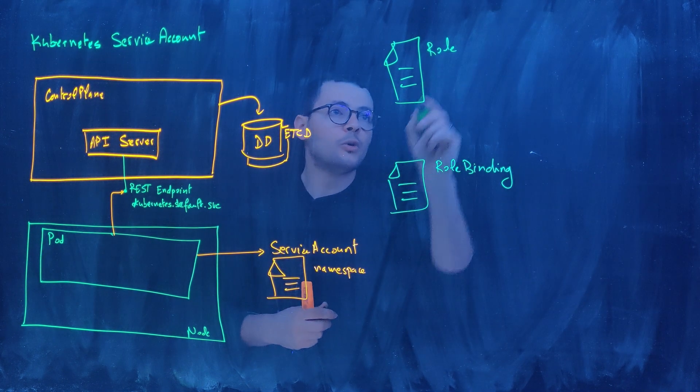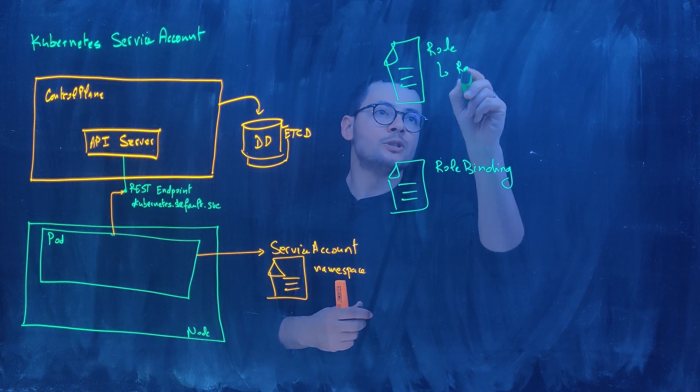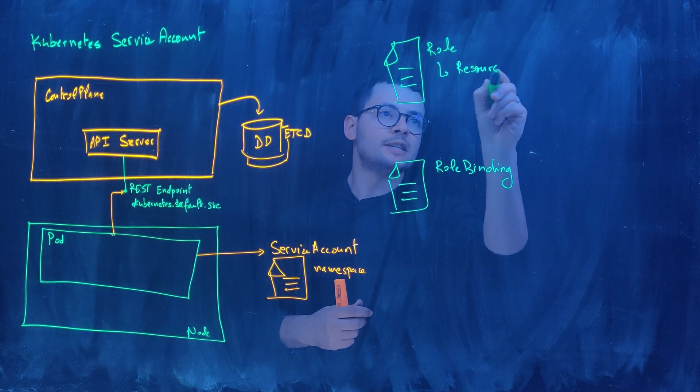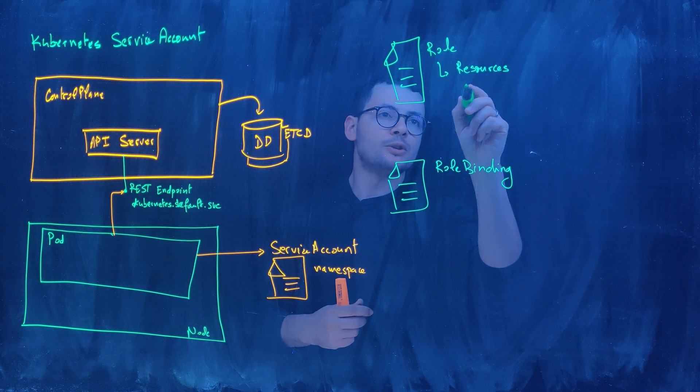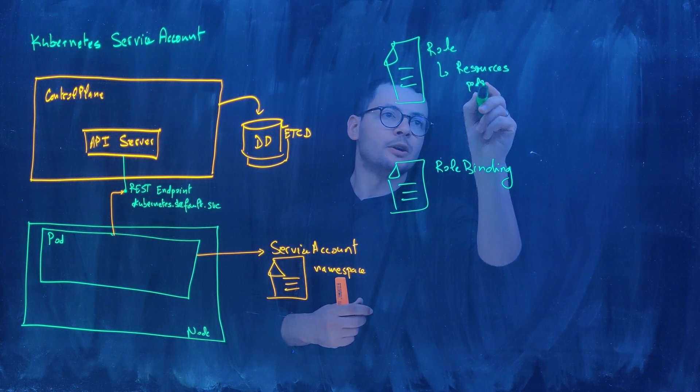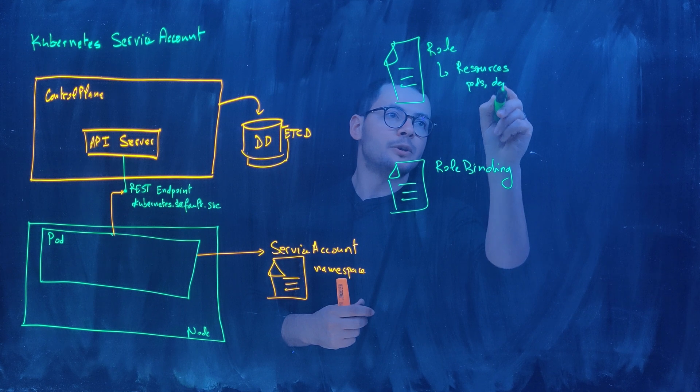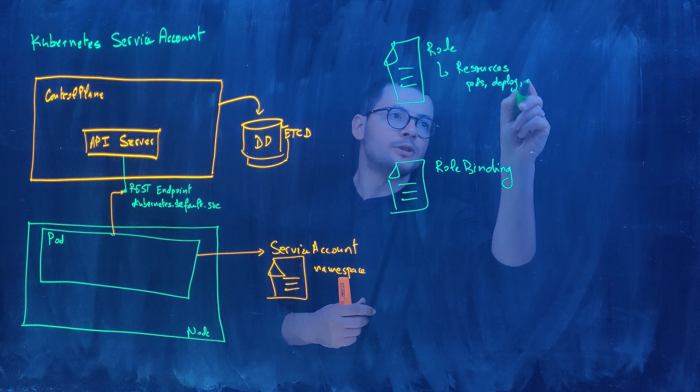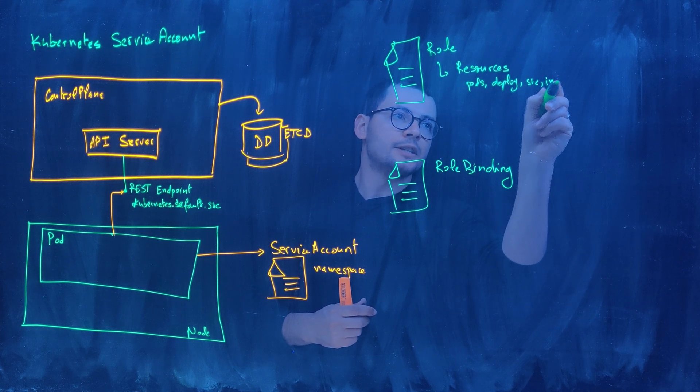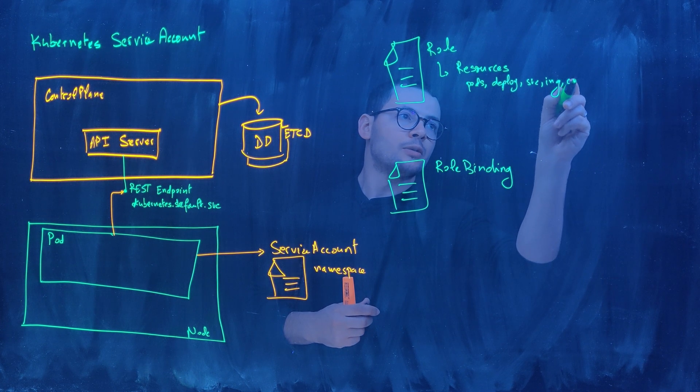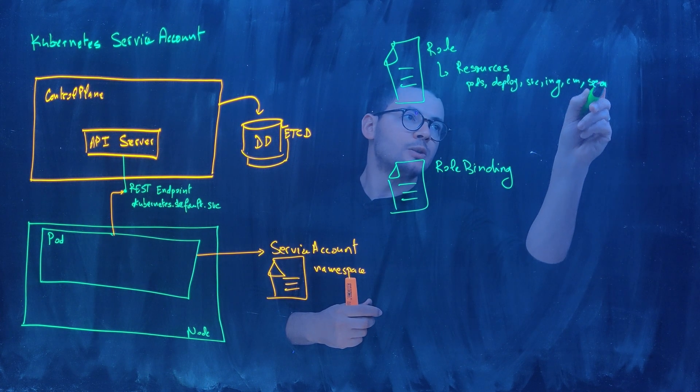Within the role, we define what are the resources that could be accessed by this role. So the resources could be like the pods, the deployment, the services, the ingress, the config maps, the secrets, and so on.